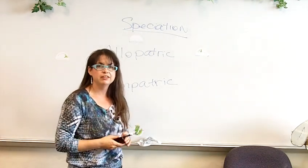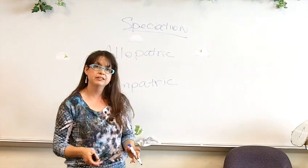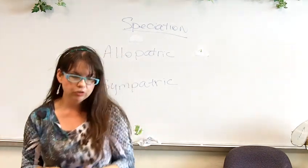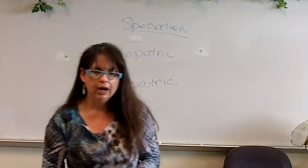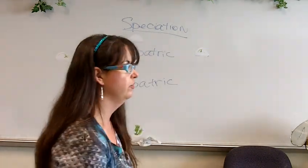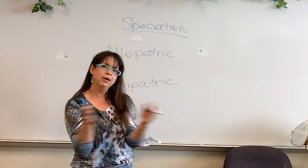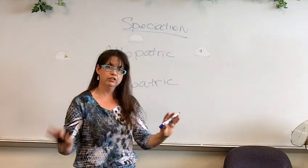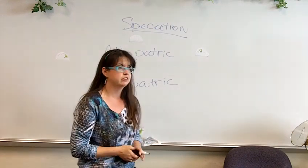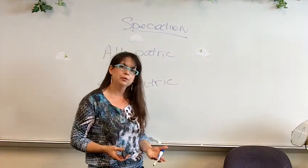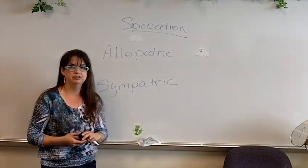I want to talk to you more about speciation. In speciation there are many different kinds, and in your chapter 3, which is a really big chapter, they talk about different types of geographic isolation, meaning that maybe one species somehow gets split apart and over time turns into two different species. I want to tell you an easy way to remember the difference between allopatric and sympatric speciation.